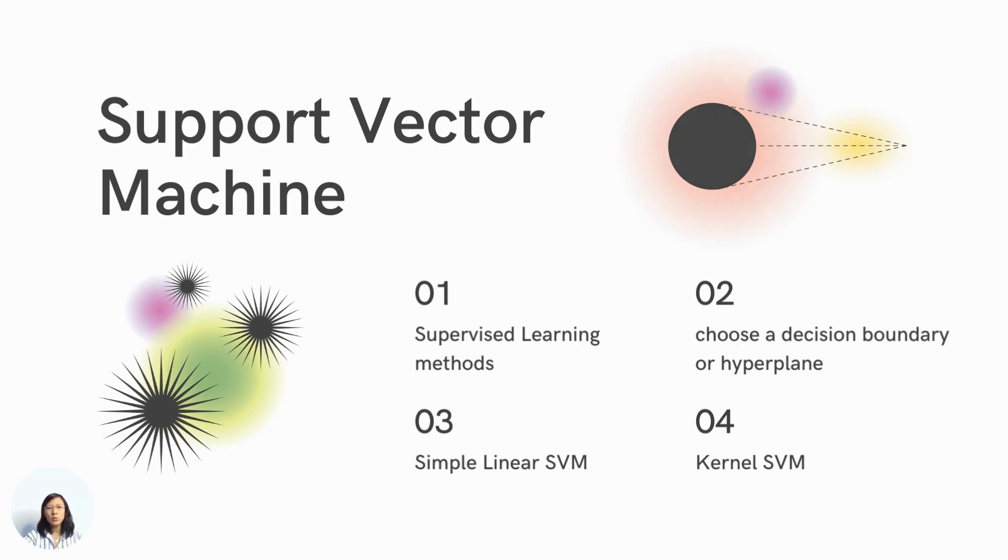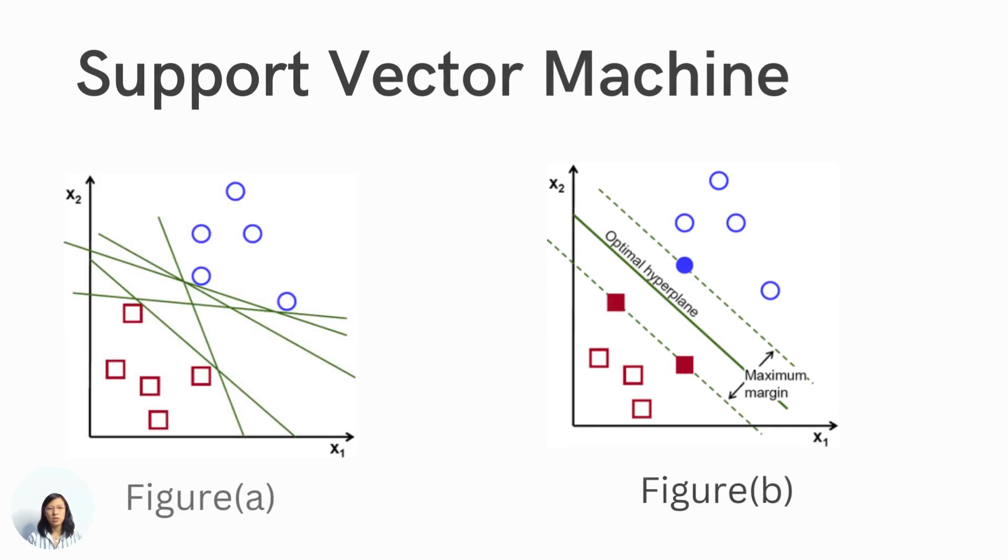So let's visualize with 2D features, two-dimensional space. If you look at Figure A, each green line is trying to separate the data points into two classes - blue color one and then red color one. So what does the SVM do? The SVM finds the best hyperplane where it can actually maximize the margin. What do I mean by margin? Margin is the distance from the hyperplane to the nearest points from each class.